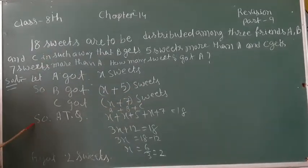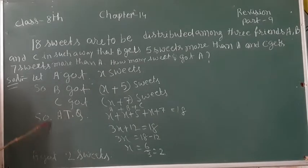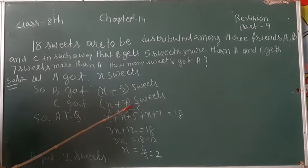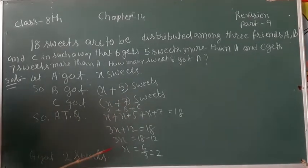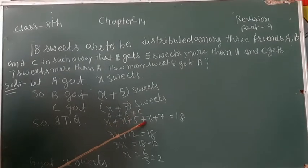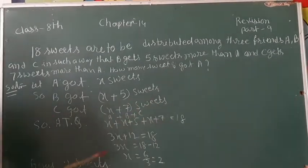Now, so according to the question, A sweets, B sweets plus C sweets. That means x plus x plus 5 plus x plus 7 is equal to 18.